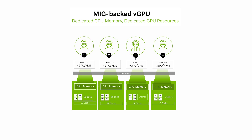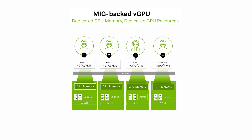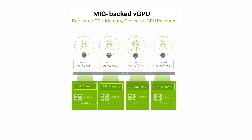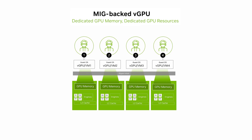With MIG, on the other hand, the division is done spatially, where you get a smaller segment of the overall GPU dedicated to your workload, or your VM. So you get some of the GPU, but for all of the time. This lends itself much more to sustained workloads such as AI training, inference, and high-performance computing.